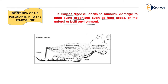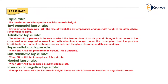Now we have to see the various types of lapse rate. What is lapse rate? With the increase in height of the environment, as we move towards the top side of the earth, the temperature goes on decreasing. This decrease in temperature with increase in height is known as lapse rate. If we move to a higher altitude or towards the atmosphere, the temperature will decrease.